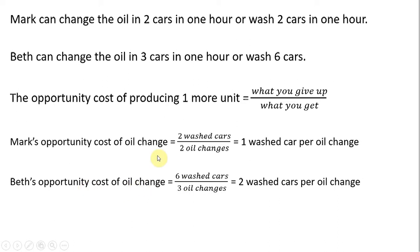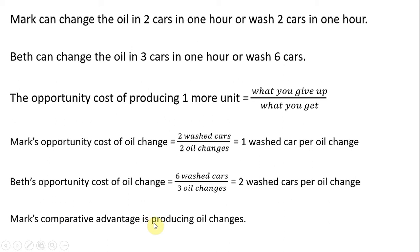Doing the same thing for Beth — her opportunity cost of doing an oil change: she would give up washing six cars in an hour and gain three oil changes. So the opportunity cost of an oil change for Beth is two washed cars — she would sacrifice washing two cars in the time it takes her to do one oil change. Therefore, Mark has a comparative advantage in oil changes. He only sacrifices washing one car, whereas Beth sacrifices washing two cars.